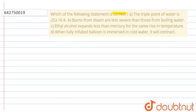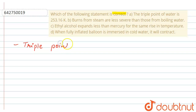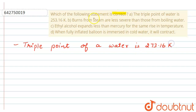Firstly, it is given that the triple point of water is 253.16 K. This is not correct because the triple point of water is 273.16 K. So we can write here: triple point of water is 273.16 K.